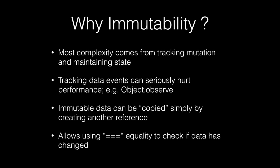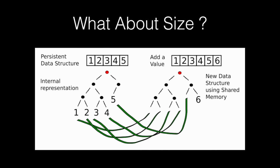Not only does immutability make your software easier to understand, for some optimizations possible with frameworks like React, it can be something like 50 times faster because of cheap checks for changes to the data. Modern immutable collections like the Immutable library use structural sharing. When you add an item to a collection, the original is unchanged but a new value is created with a reference to the original — only the new item is stored in memory. The data structures share common data between multiple values, so you don't need to worry about memory inefficiency.